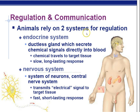Animals rely on two systems for regulation. We have the endocrine system as well as the nervous system. The thing you need to know is which one's fast, which one's slow, which one's longer-acting, which one's slower-acting. The endocrine system consists of ductless glands, which means that they secrete their products right into the bloodstream. Endocrine system: ductless glands, secrete chemicals directly into the blood.